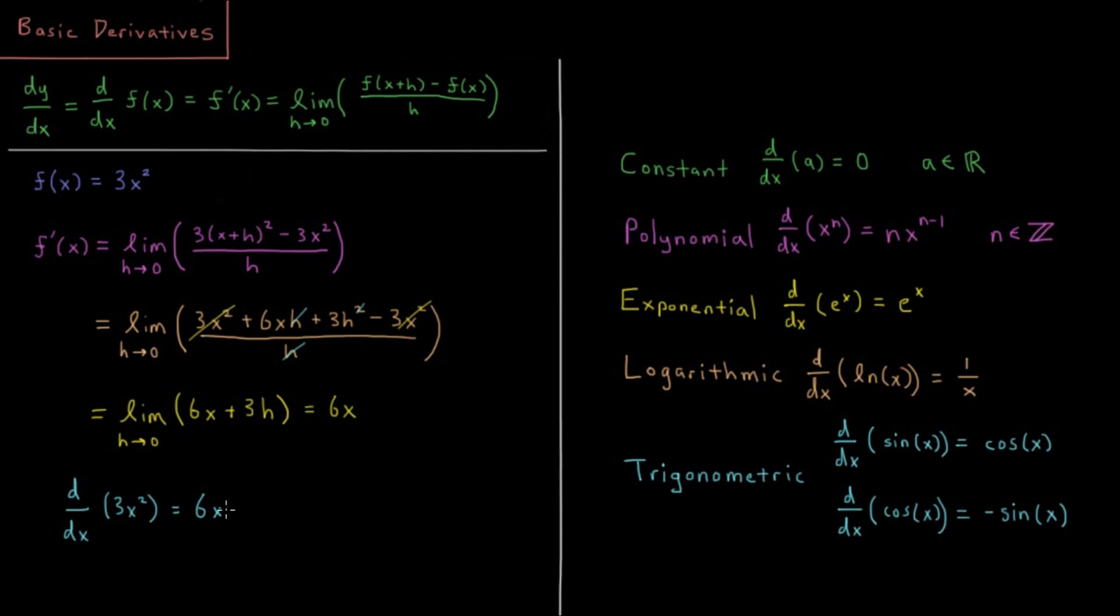So that was fine, we can do that for a handful of functions, but we don't want to do this every time. This will get very time consuming very quickly if we have anything but a very simple function to work with. So what we need are some rules to help us speed this process up and make it a lot quicker to deal with. What we have over here on the right are the rules for some common types of functions, and what their derivatives are going to be.